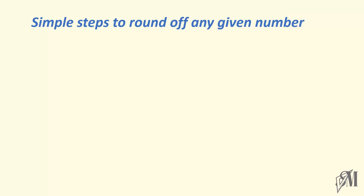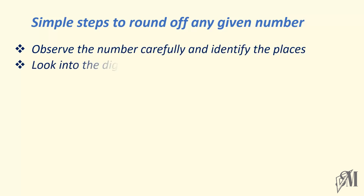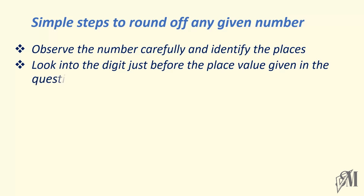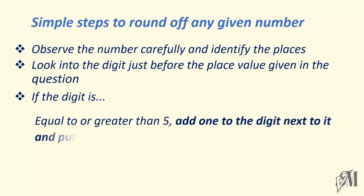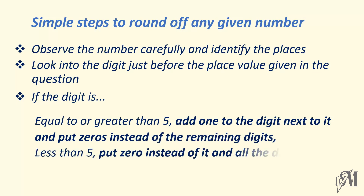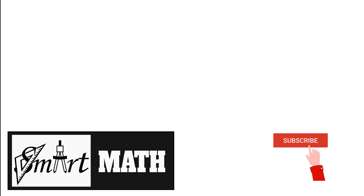Let's have a look at the simple steps to round off any given number to a nearest value. First, observe the numbers carefully and identify the places. Then look at the digit just before the place value given in the question — if they ask you to round off to the nearest thousand, look at the digit in the hundreds place, and so on. If the digit is equal to or greater than 5, add 1 to the next digit and put zeros instead of the remaining digits. If the digit is less than 5, put 0 instead of it and all digits after it. Hope I made myself clear — see you with another Smart Math clip. Goodbye!